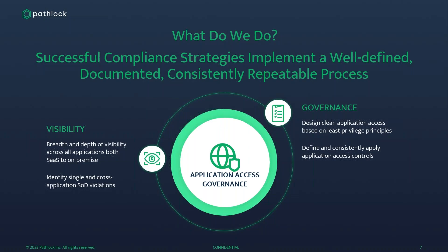Once we have visibility, it feeds into our governance program. We want to establish clear governance policies and procedures, including a least-privileged access model, uniformly applying defined application access controls across the entire ecosystem, and establishing standards for provisioning or deprovisioning access. After governance, the next step is security: implementing balanced, real-time, risk-based security — standardizing and automating across our full application landscape with defined compliance strategies. Visible, govern, secure — that's how we address access.